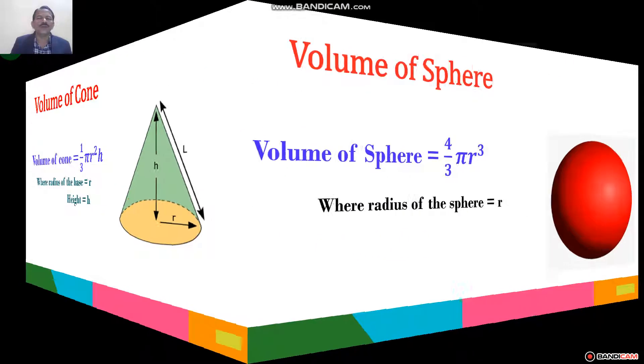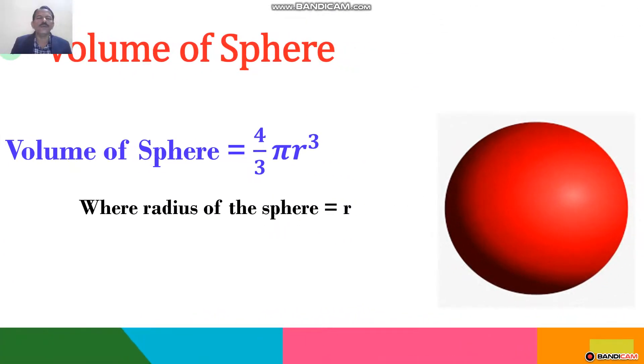Now, the volume of the sphere. Volume of the sphere is equal to 4 by 3 pi r cube, where the radius of the sphere is equal to r.